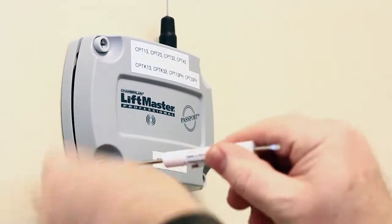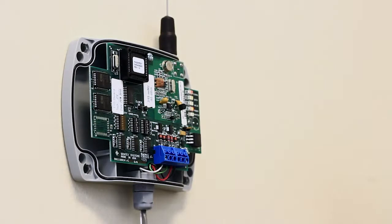After locating your existing receiver, disconnect from power and remove the access panel.